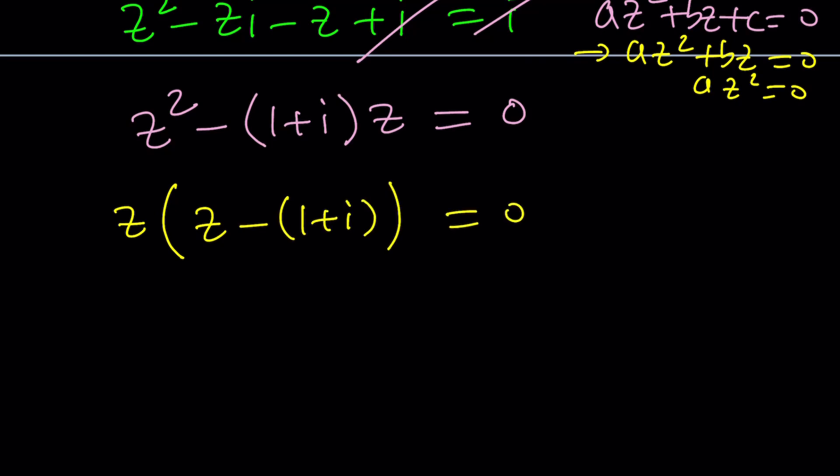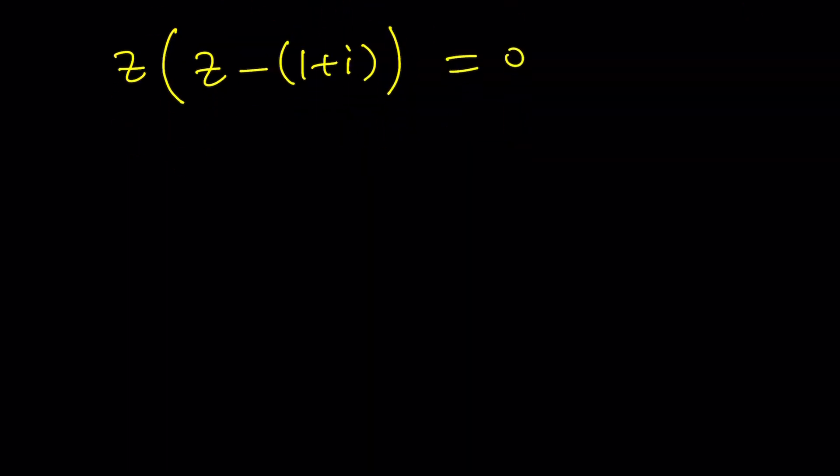First one is factor out the z and you're going to get z times the quantity z minus 1 plus i equals 0. And from zero product property, such a weird name, right?